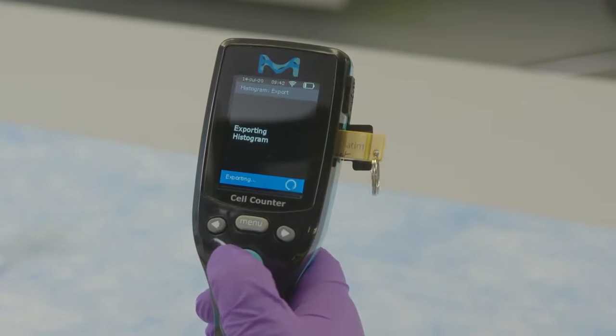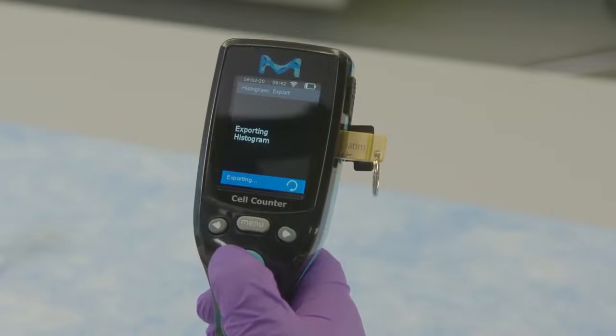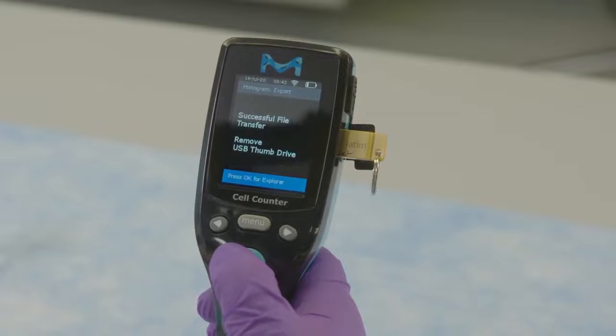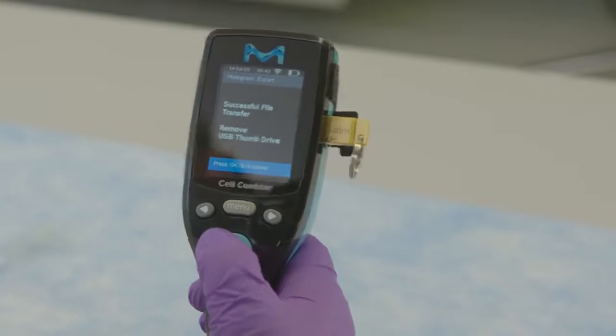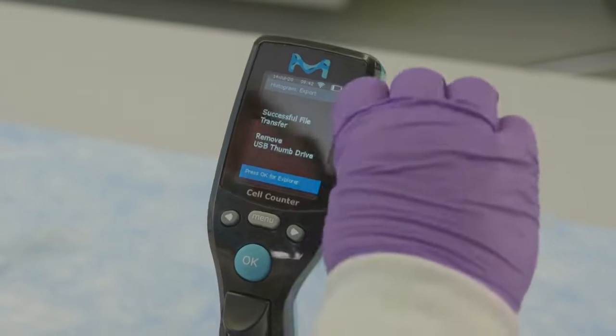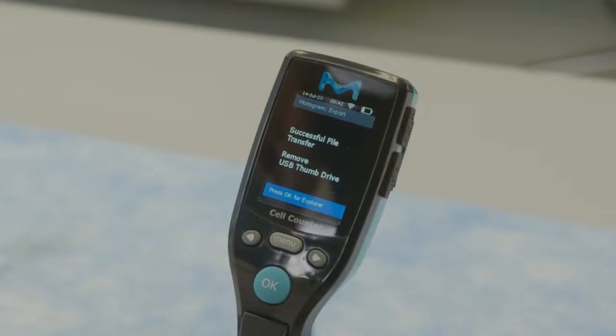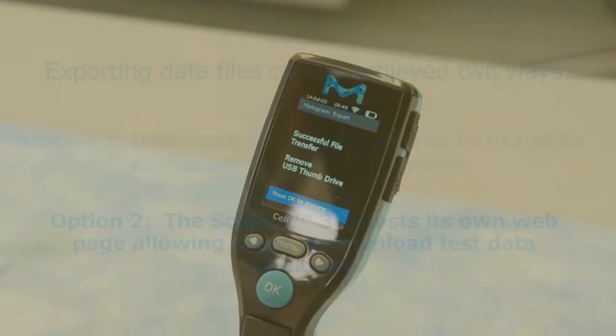Histograms will be displayed on the screen and image PNG and data CSV files are exported. Export is complete when the successful file transfer remove USB flash drive message shows on the screen. Remove the USB flash drive and press OK to return to the main histogram explorer screen.